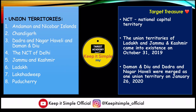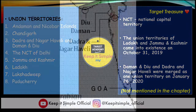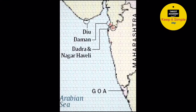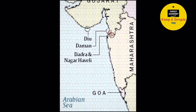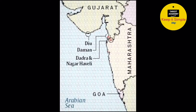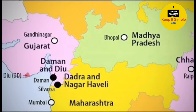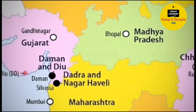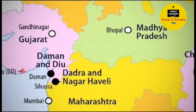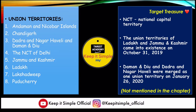Daman & Diu and Dadra & Nagar Haveli were two different Union Territories, and they were combined into one Union Territory on January 26, 2020. There is a lot of interesting information in this chapter, and we have covered a lot of important things you should know about our country.